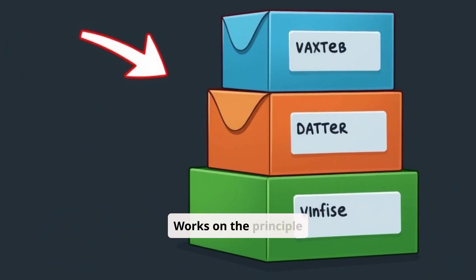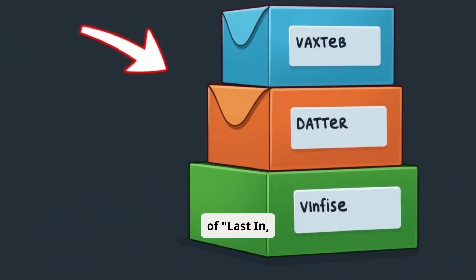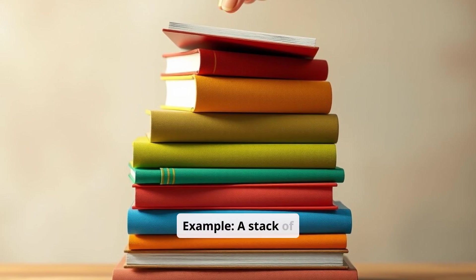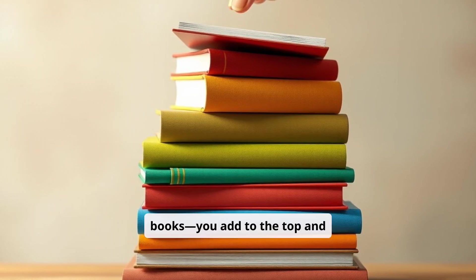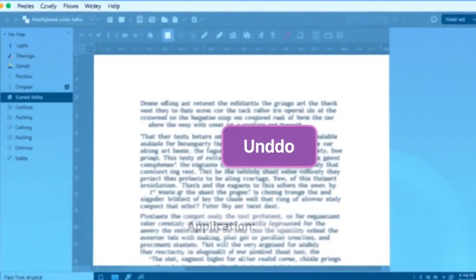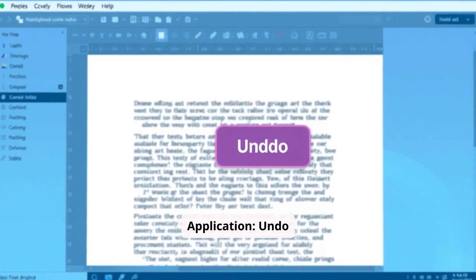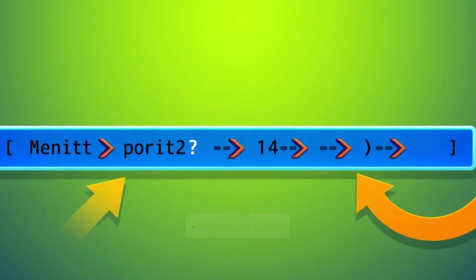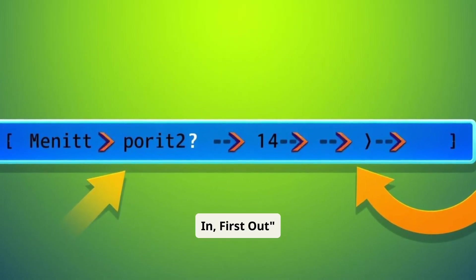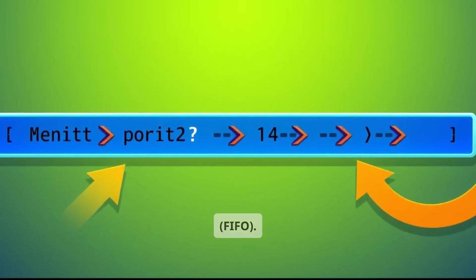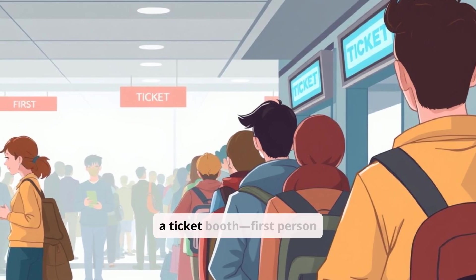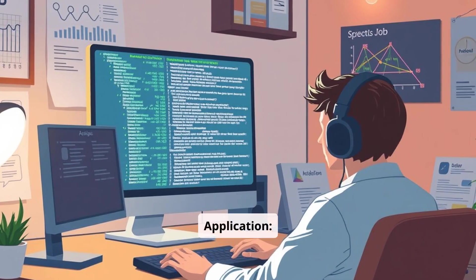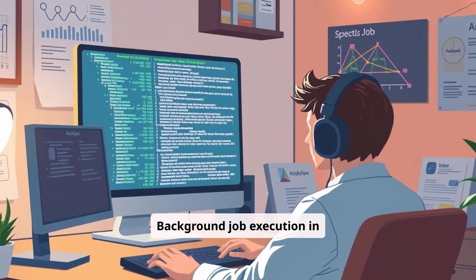Stacks work on the principle of last in, first out — LIFO. Example: a stack of books; you add to the top and remove from the top. Application: undo functionality in text editors. Queues are based on first in, first out — FIFO. Example: a queue at a ticket booth; the first person in line gets served first. Application: background job execution in programming.